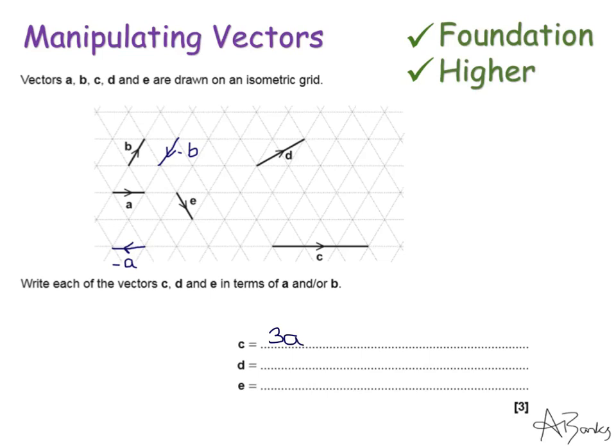Now D is slightly different. D goes diagonally across like this. How can I make D out of what I've got, which is A and B, and minus A and minus B? I could write D to get from there to there, I could go across one and up one instead. That across one is A, and this up direction is B. So D is the same, going across D is the same as going A then B. I can write D as A plus B.